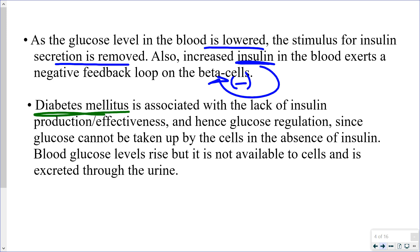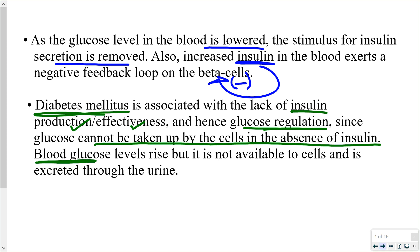The major condition related to the inability to regulate blood glucose is diabetes mellitus. This is related to insulin — either a lack of insulin production or insulin that is produced but doesn't work effectively. These individuals lose blood glucose regulation; glucose cannot be taken up by cells without insulin. They can have enormous blood glucose levels while their cells are starving. If glucose remains in the blood, the kidneys eventually cannot reabsorb it all, so glucose ends up in the urine.